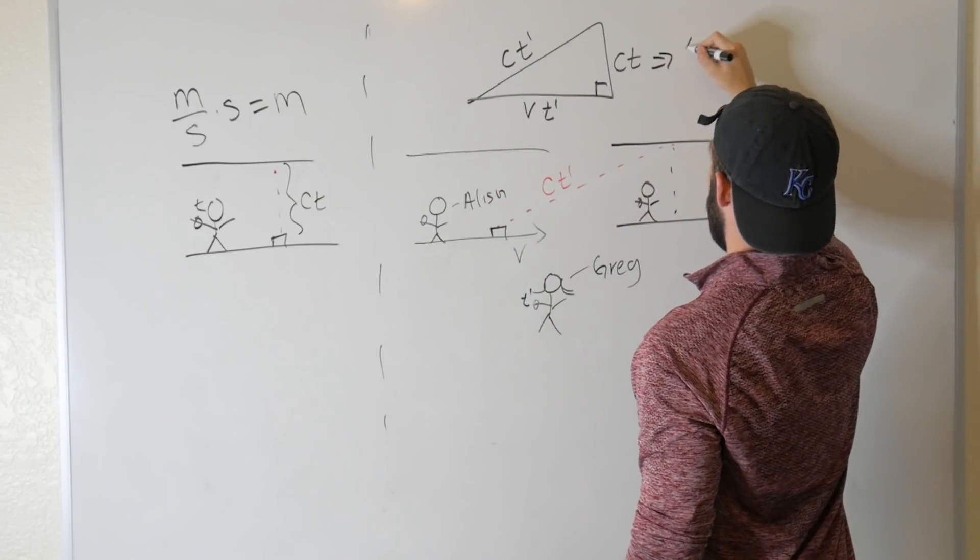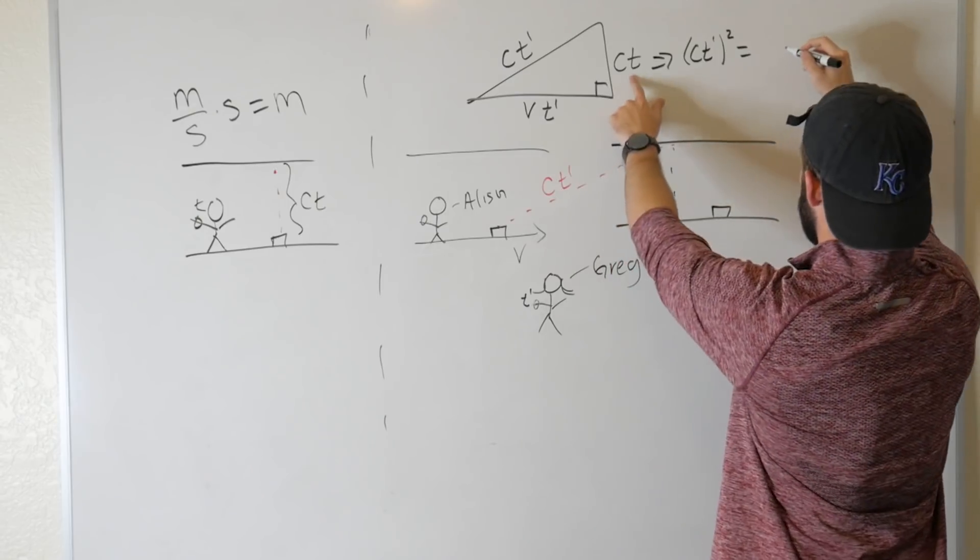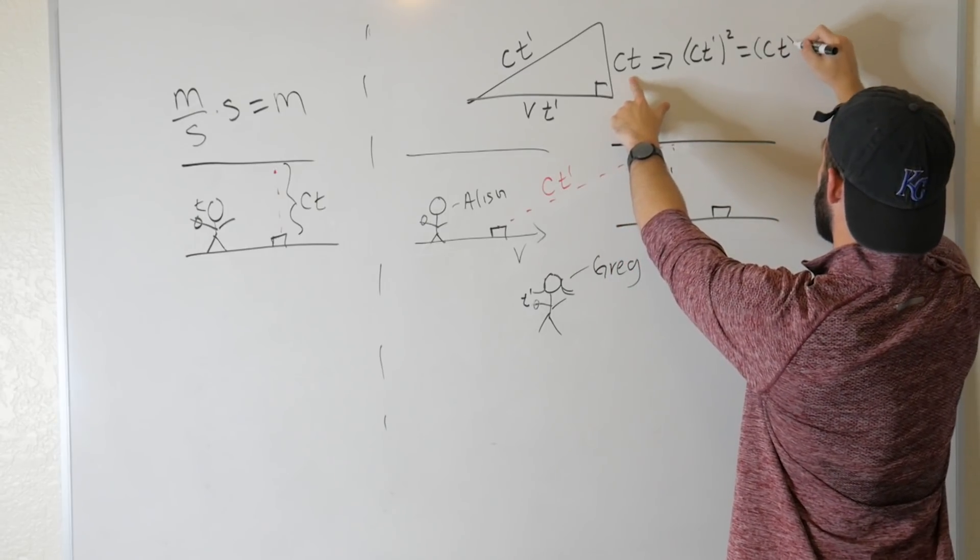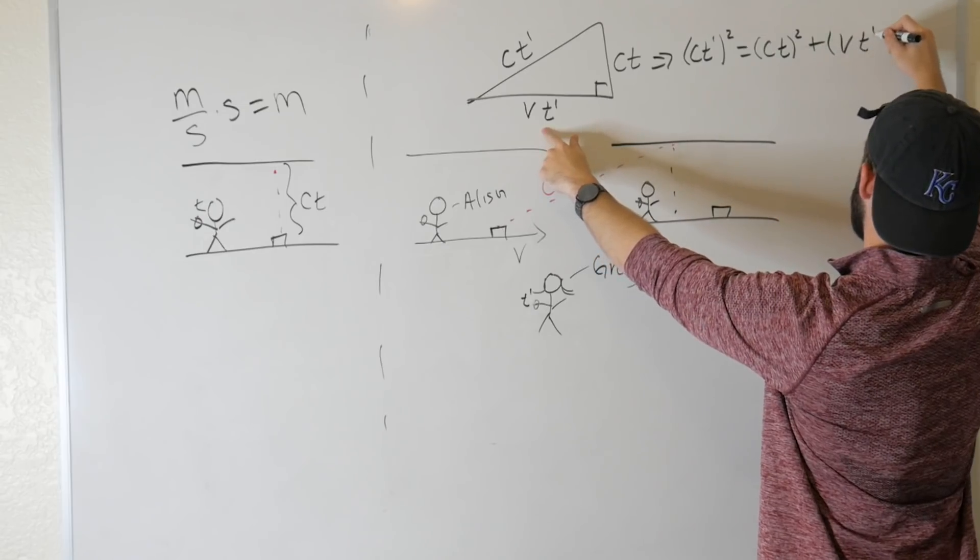So we get C T prime squared is equal to C T squared plus V T prime squared.